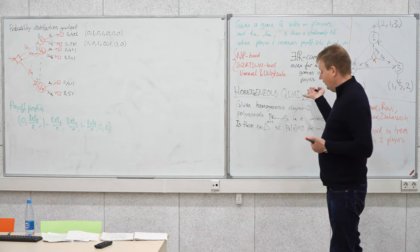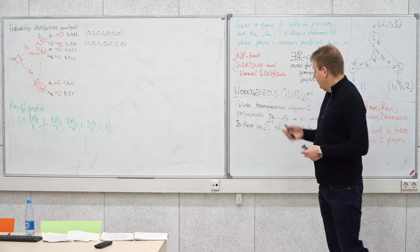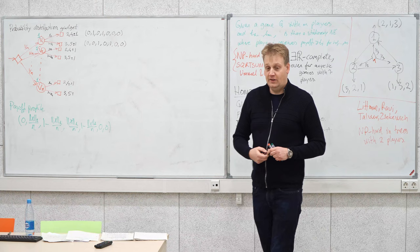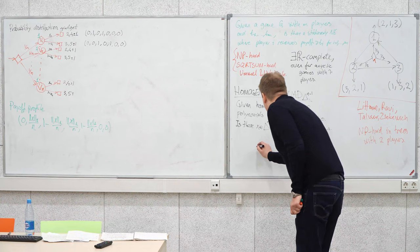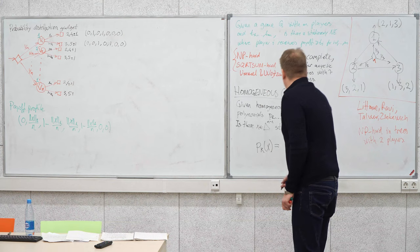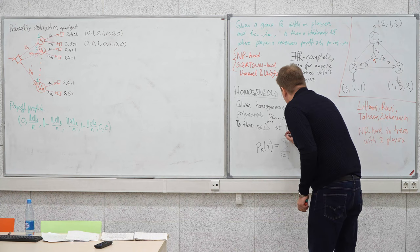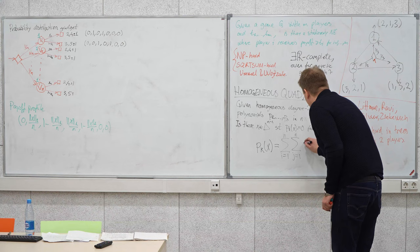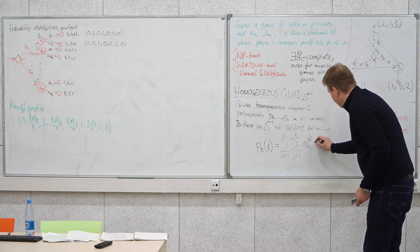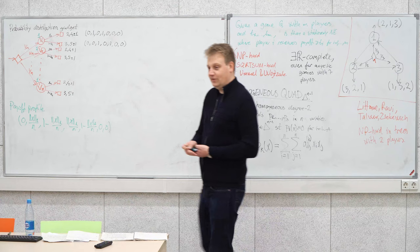Now we need to make sure there's a solution to the system — that each polynomial evaluates to 0 on the chosen x. I write a homogeneous degree-2 polynomial as sum over i and j of coefficients a_{i,j,k} times xi times xj. I'll assume these coefficients lie between minus 1 and 1, which can be achieved by dividing by a suitable number. This is the multiplication gadget, which I'll now build.